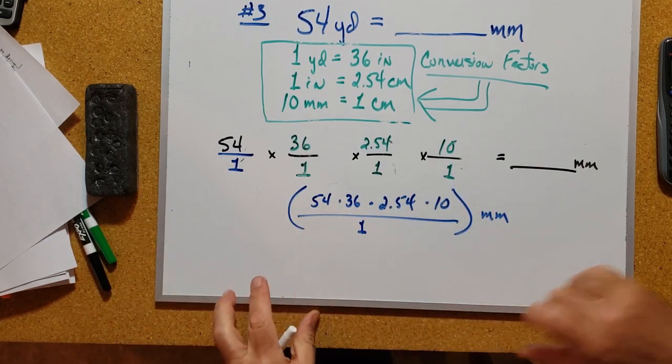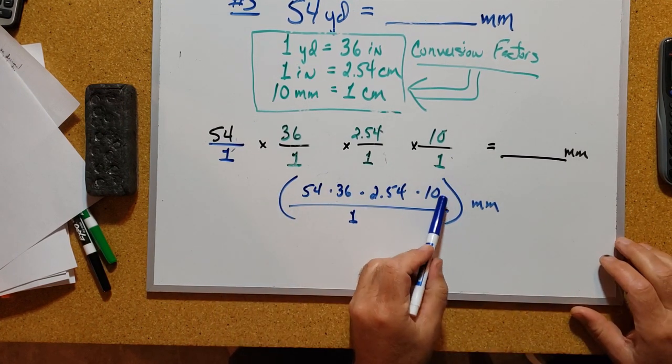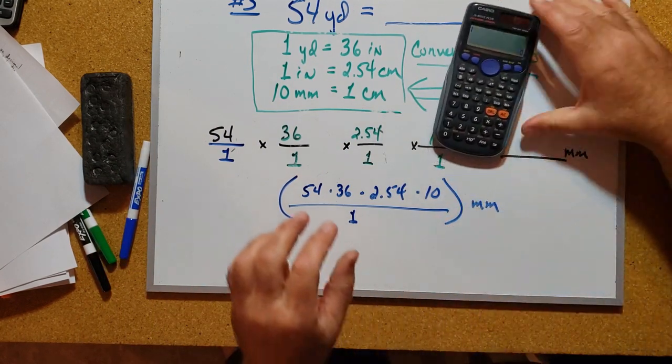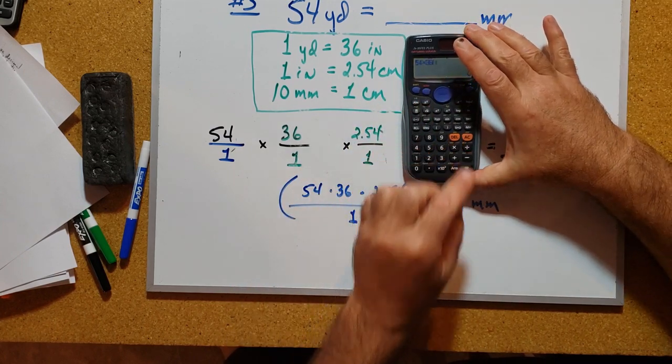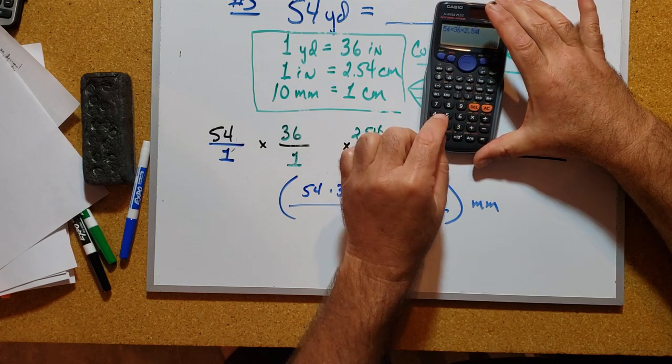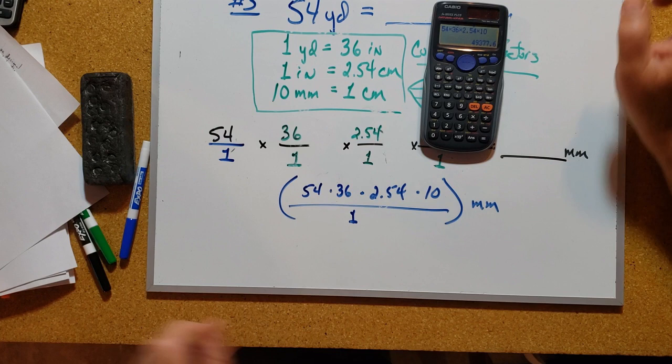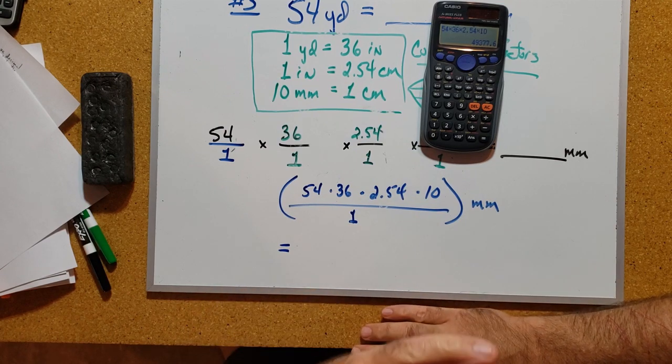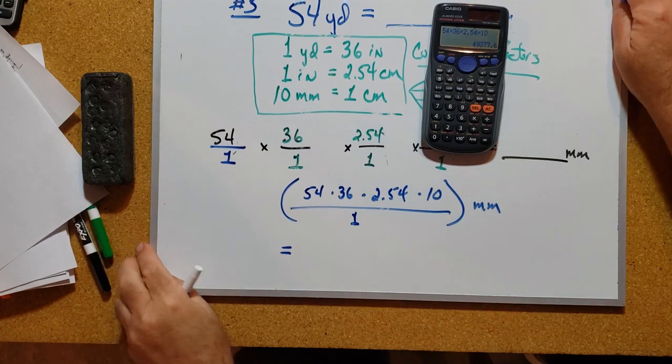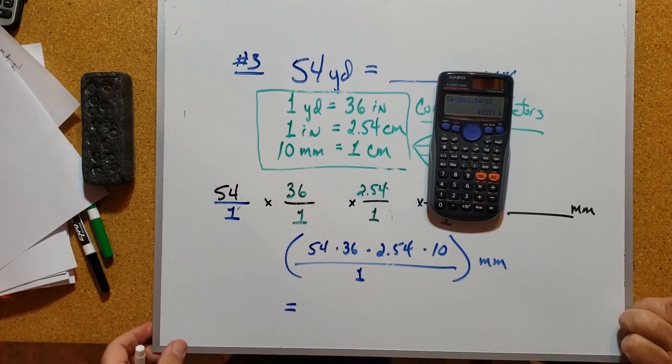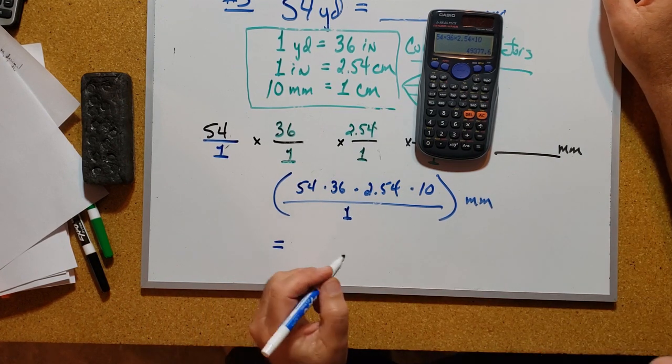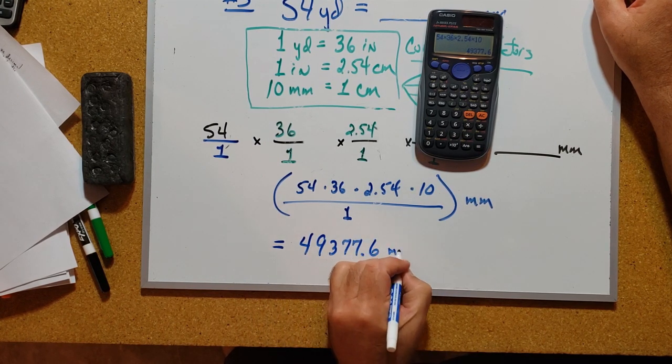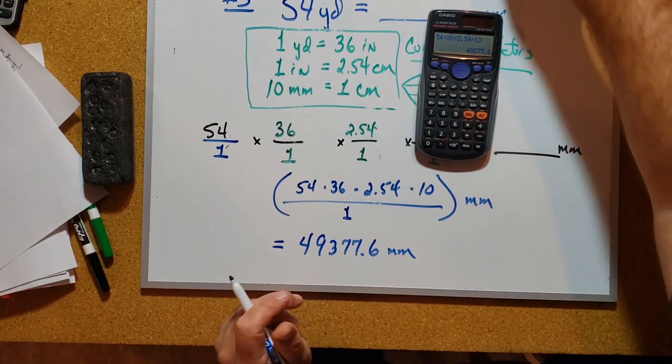Now don't leave it like that. Go ahead and carry out the multiplication up top and then divide by 1, which of course you don't really have to do because it's not going to change anything. So let's go ahead and say 54 multiplied by 36 multiplied by 2.54 multiplied by 10. Now remember, we're asking ourselves how many millimeters from the goal line on a football field out beyond about midfield - just a little more than 50 yards, 54 yards - how many millimeters is that? Well, we're getting 49,377.6 millimeters as an answer, and that's quite a few, which makes sense since millimeters are so small. Am I done?